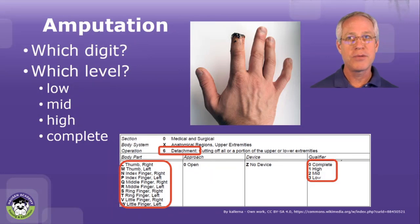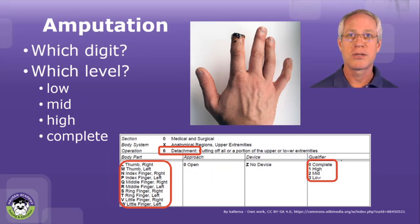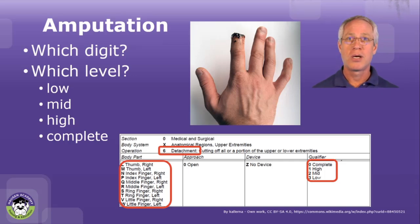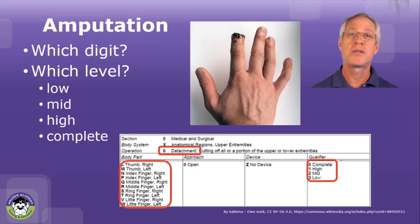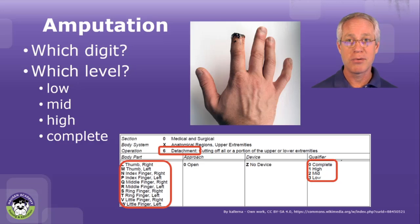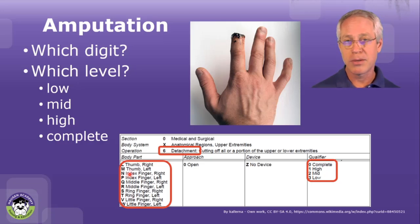Now, if there is a documented formal amputation — that is, a shortening of the bone, cutting back of the tendons and the nerves, followed by skin closure with flaps or otherwise — the detachment root operation is probably more accurate if all the elements of a detachment or amputation are present. Next, we need to know which digit is involved and at what level to do the PCS coding.